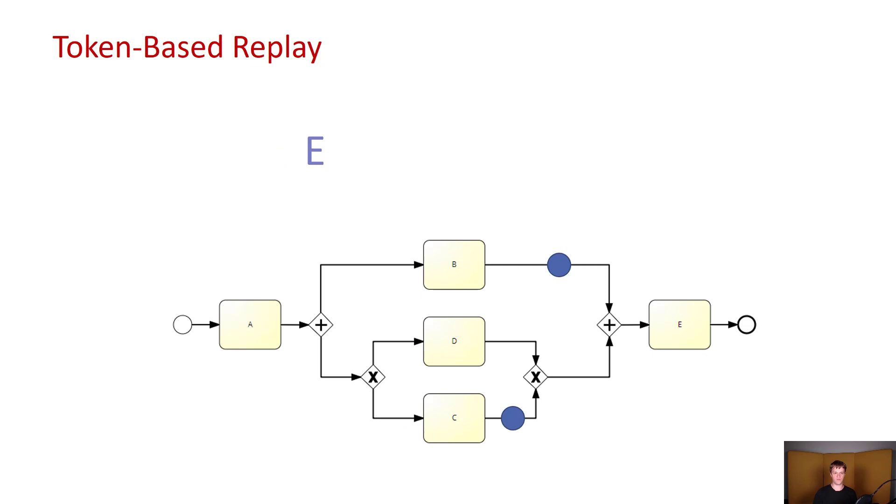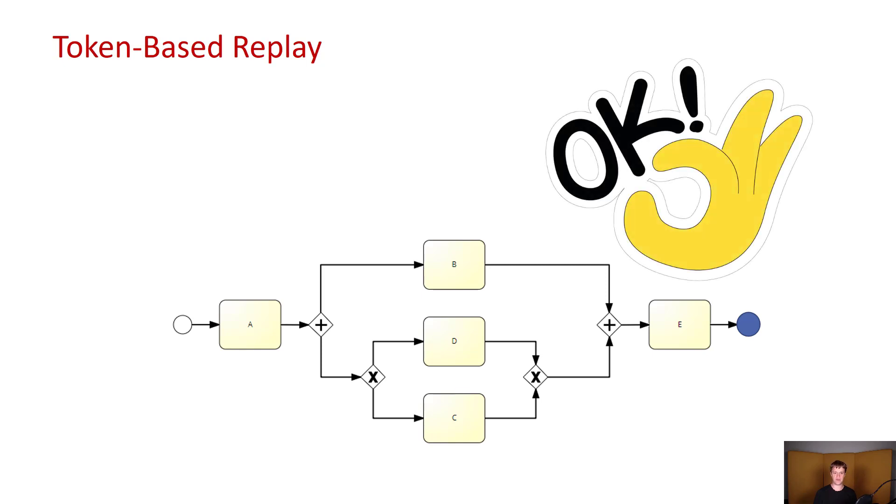Again, we are going to move the token forward, consume C, and then we can proceed with the replay. Now we can see that E is the next one to be executed. So here we have to go first through the XOR join gateway at the bottom branch and then through the parallel gateway just before E. The parallel gateway is going to also join the two tokens that we had previously into one. And now we can execute E and we reach the end of the process model with a single token. This is a successful replay where the model and the log matched perfectly.